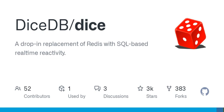DiceDB is a drop-in replacement of Redis with SQL-based real-time reactivity baked in. DiceDB is still in development and it supports a subset of Redis commands. Please do not use it in production, but feel free to contribute to help speed up development by addressing open issues.